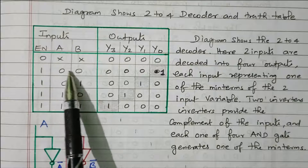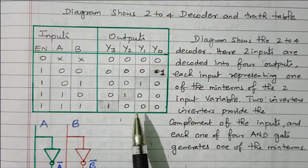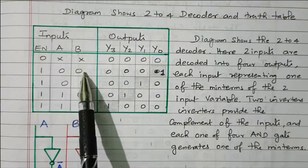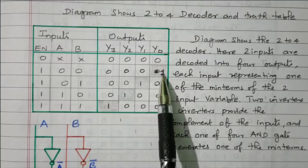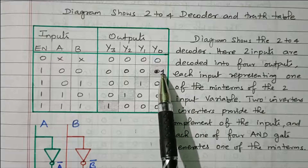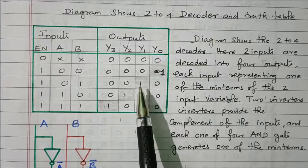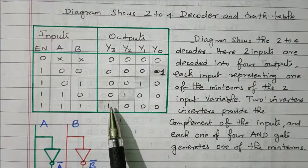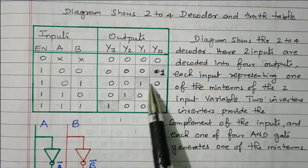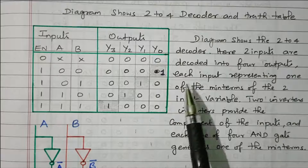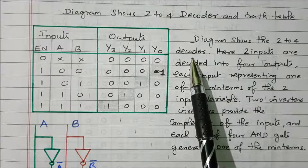So with the 2-digit input, we are getting 4 different outputs. Based on the 4 possibilities, the output may be Y0, Y1, Y2, or Y3 equal to 1, with the remaining digits being 0. So we are getting 4 possible outputs. Next we will see the logical diagram.